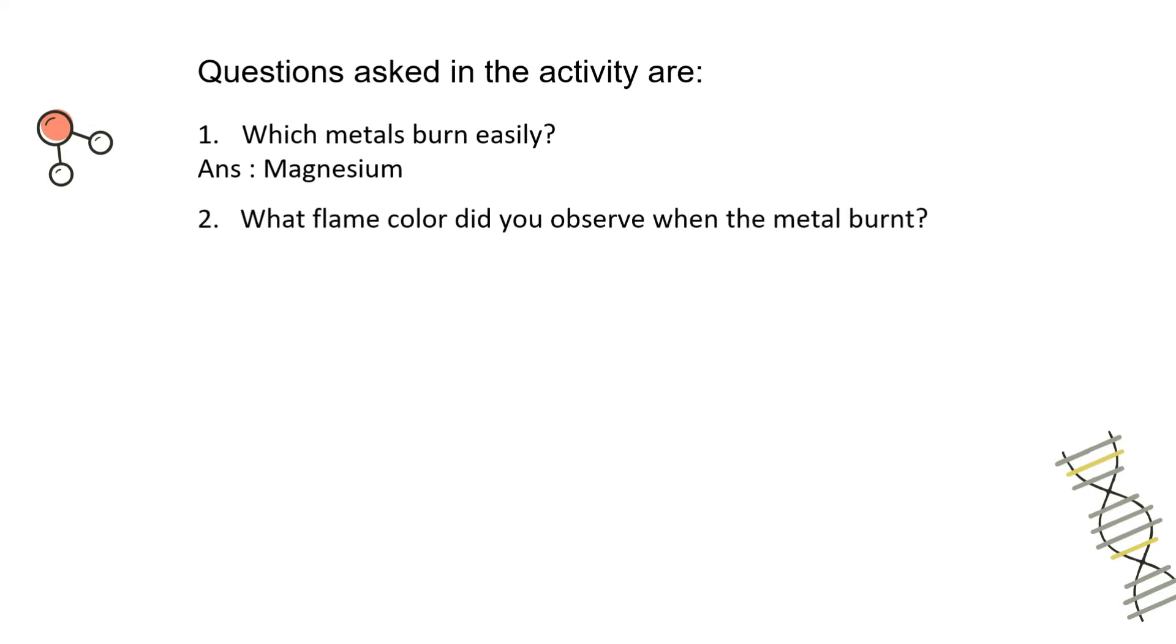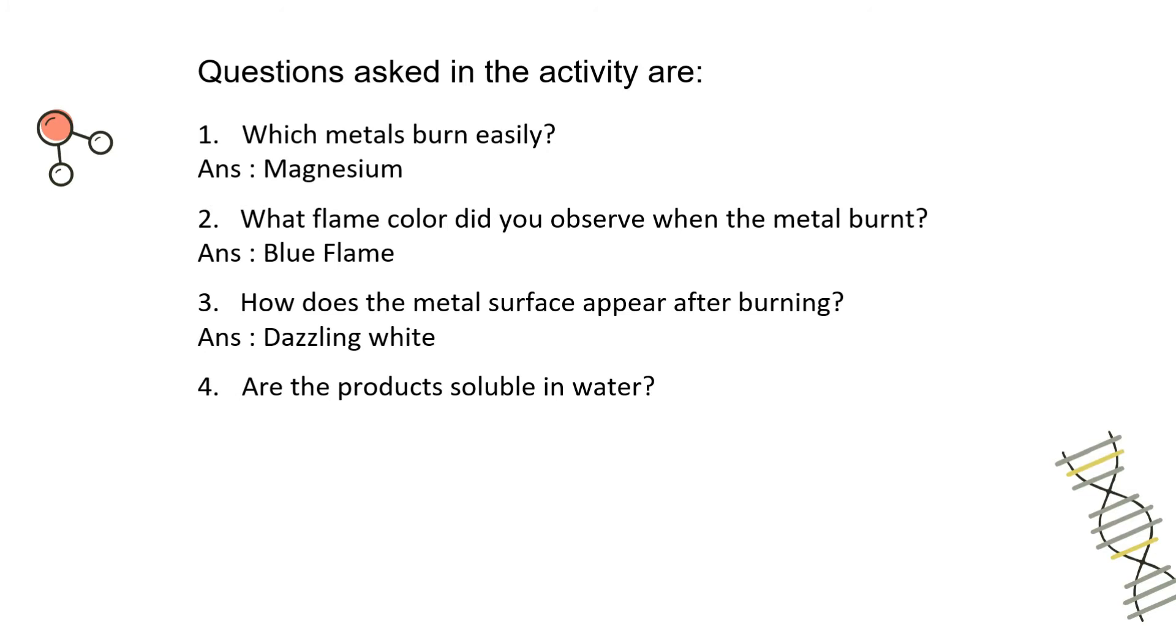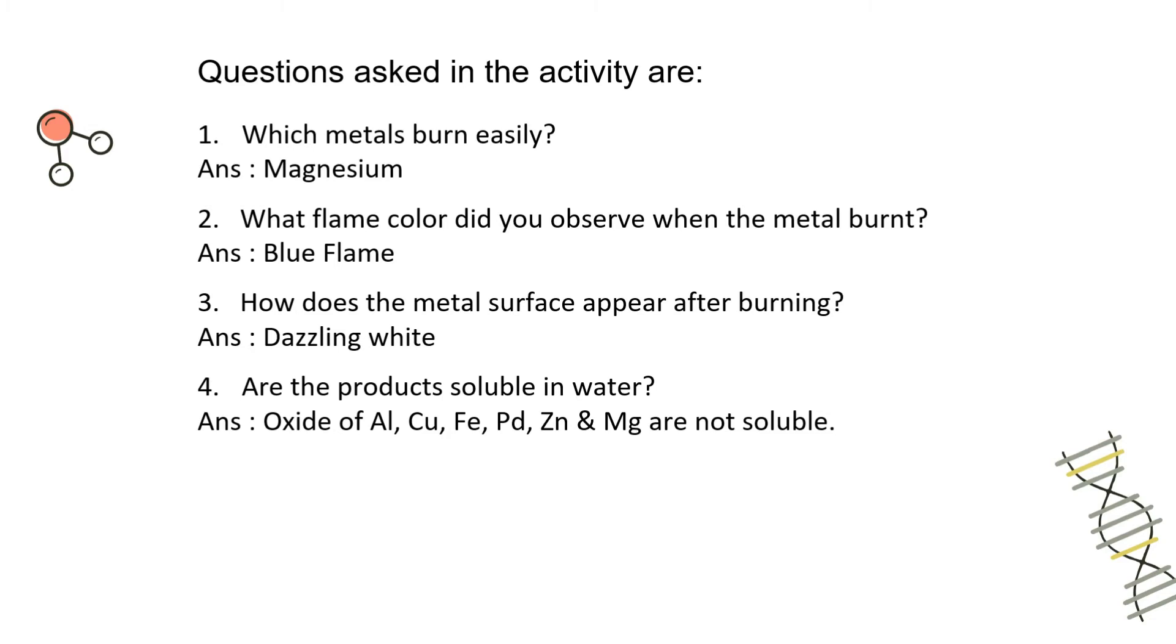What flame color did you observe when the metal burnt? Yeah, you guessed it right. It will be blue flame. Now how does the metal surface appear after burning? It would be dazzling white. Are the products soluble in water? No. Oxides of aluminium, copper, iron, zinc and magnesium are not soluble. These are the oxides of metal which are not soluble.